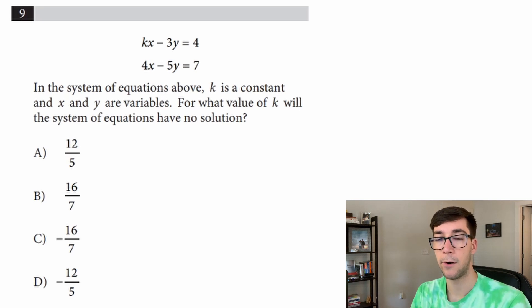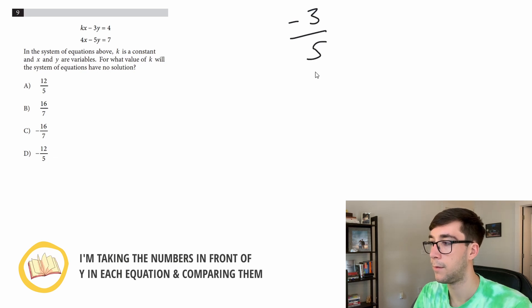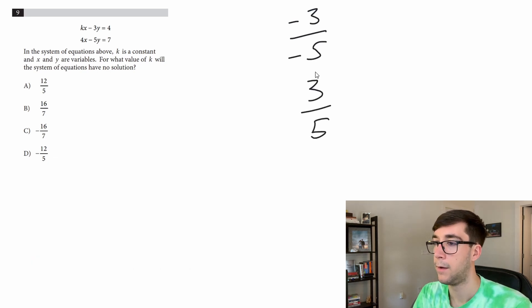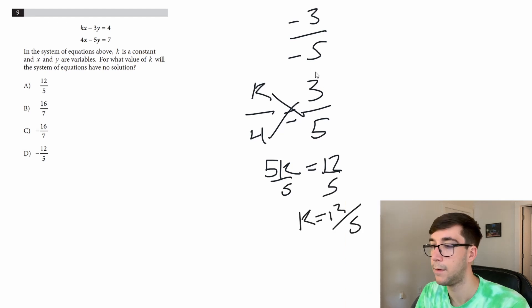So the y's: it's negative 3 over negative 5 which is 3 fifths. And the x's are just k over 4. So we want them to be the same proportion, meaning they are equal, and we can solve this by just cross multiplying. So k times 5: 5k, 4 times 3 is 12, so 5k equals 12 divided by 5, k equals 12 fifths and that is A. So tough looking question if you don't know how to do this, you'll probably just skip this one, stumble on and guess on this one. But if you do, super quick, takes a couple seconds, easy right answer, you can move on to the next.